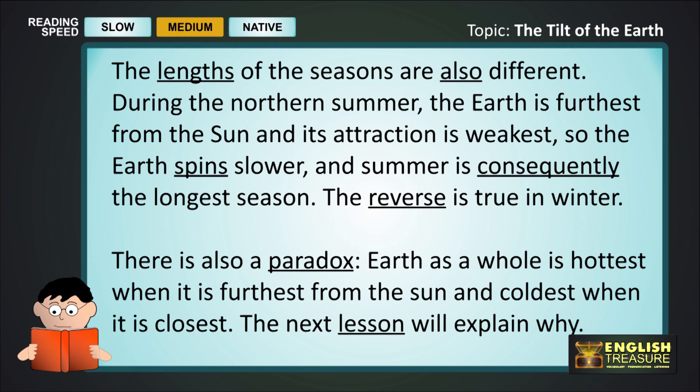There is also a paradox. Earth as a whole is hottest when it is furthest from the sun, and coldest when it is closest. The next lesson will explain why.